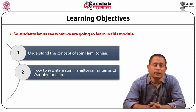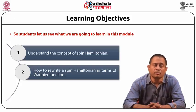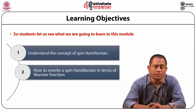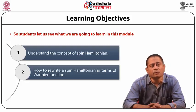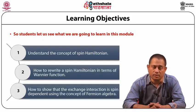The second learning objective is how to rewrite a spin Hamiltonian in terms of Wannier functions. Wannier functions are a special kind of functions used to describe tight-binding approximate models. The third thing you will learn is how to show that the exchange interaction is spin-dependent using the concept of fermion algebra.